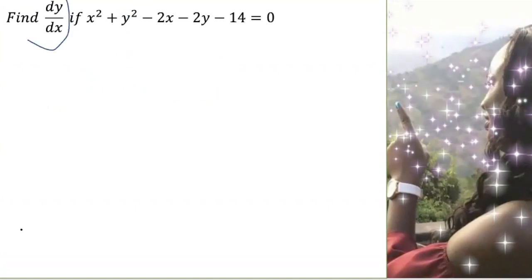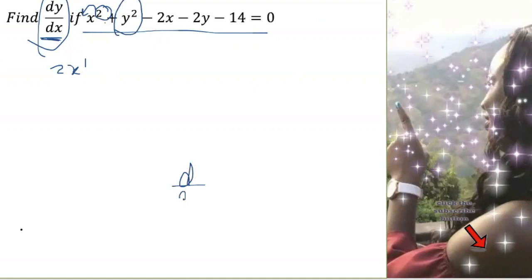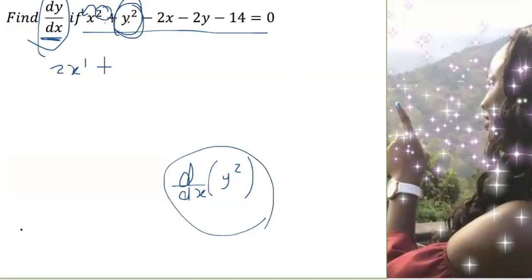Finding dy/dx, I'm going to differentiate the following equation. First, differentiating x squared — we know how to do that: carry the power in front, so I'll have 2x, then subtract 1 from the power, giving 2x to the 1. Now to differentiate y squared, because we're differentiating with respect to x, y is a function of x, so this is how we differentiate y squared.